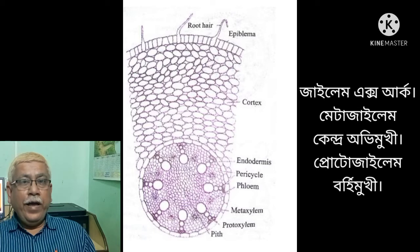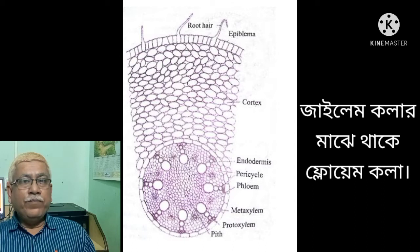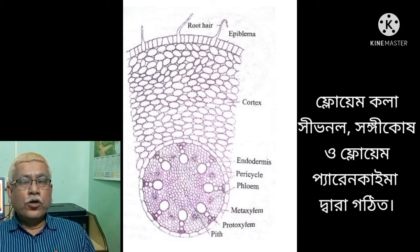Xylem is exarch — that is, protoxylem is oriented towards the exterior and metaxylem towards the interior. In between two xylem strands there is phloem. Xylem consists of tracheids, trachea, and xylem parenchyma. Phloem consists of tracheids and phloem parenchyma.